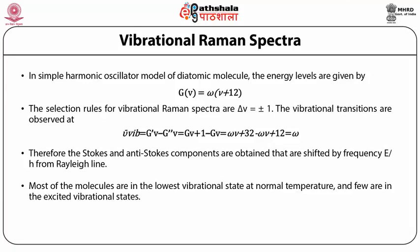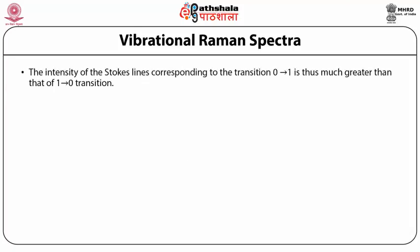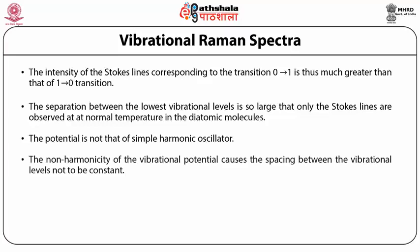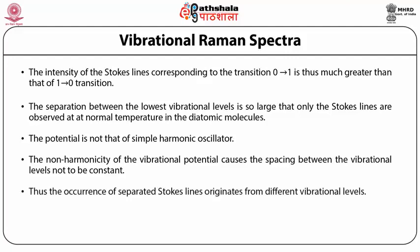The intensity of the Stokes lines corresponding to transition 0→1 is thus much greater than that of the 1→0 transition. The separation between the lowest vibration levels is so large that only the Stokes lines are observed at normal temperature in diatomic molecules. The potential is not that of a simple harmonic oscillator. The anharmonicity of the vibrational potential causes the spacing between the vibration levels not to be constant. Thus, the occurrence of separated Stokes lines originates from different vibrational levels.